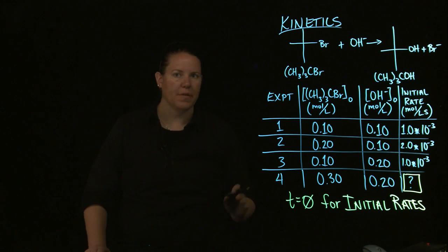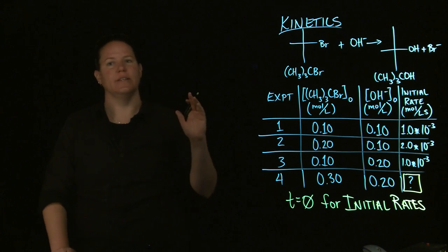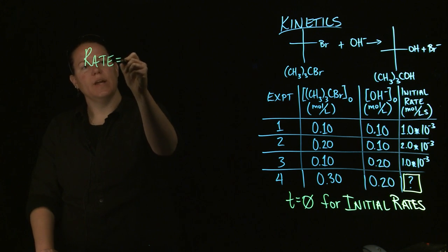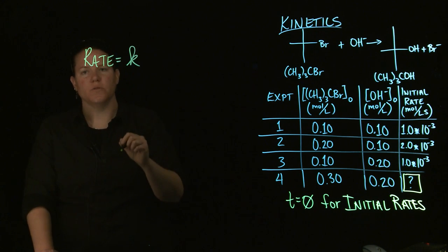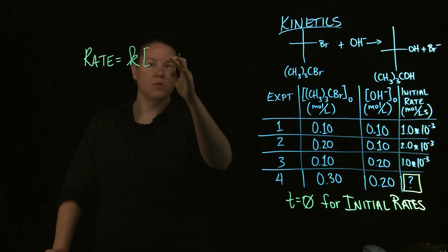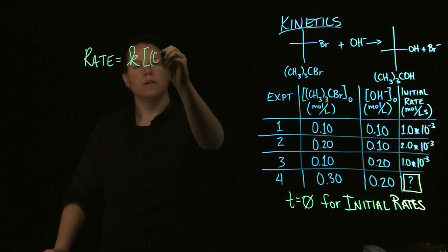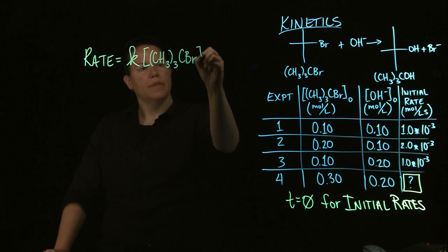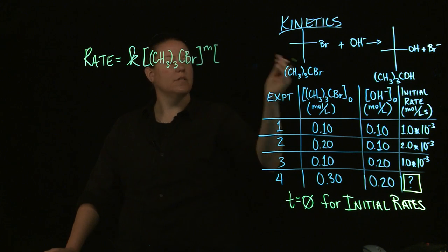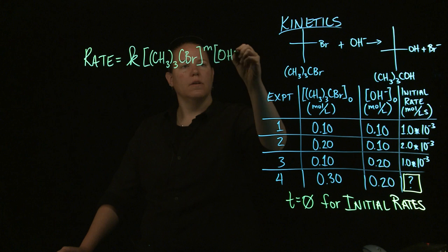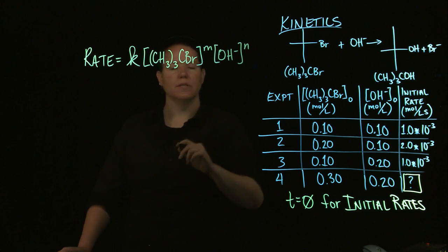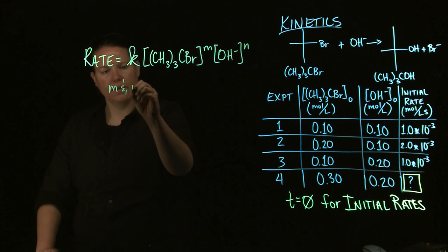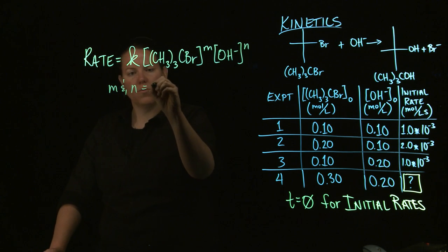To be able to find out what that last initial rate is, we actually have to find the rate law. The rate law in general form is: rate equals K times reactant 1 to the M power times reactant 2 to the N power, if you have one. In this case, our reactants are given to us. Now, what are M and N? M and N are what we call reaction orders.